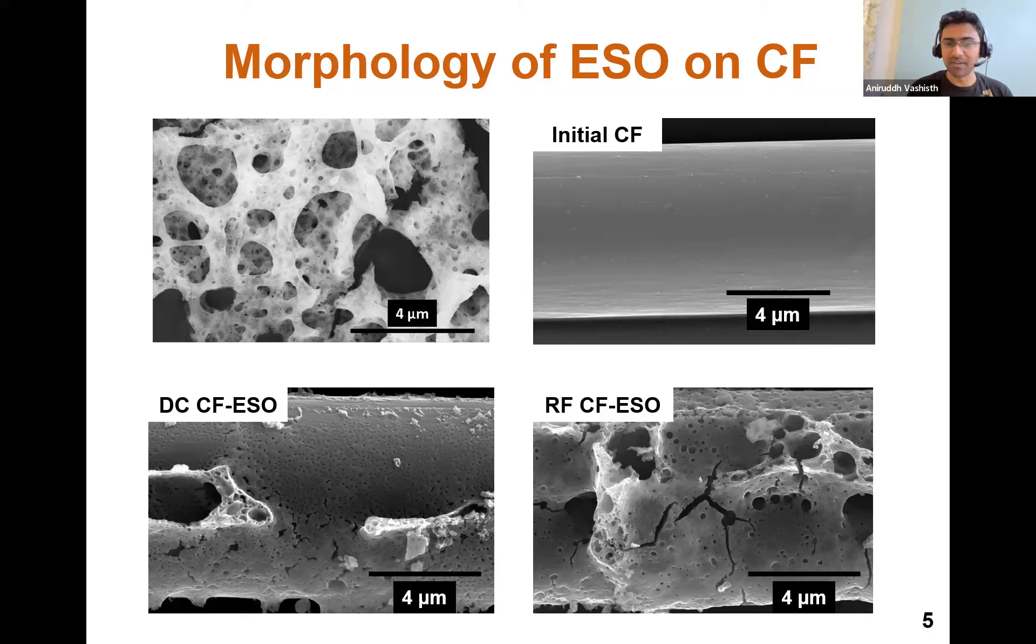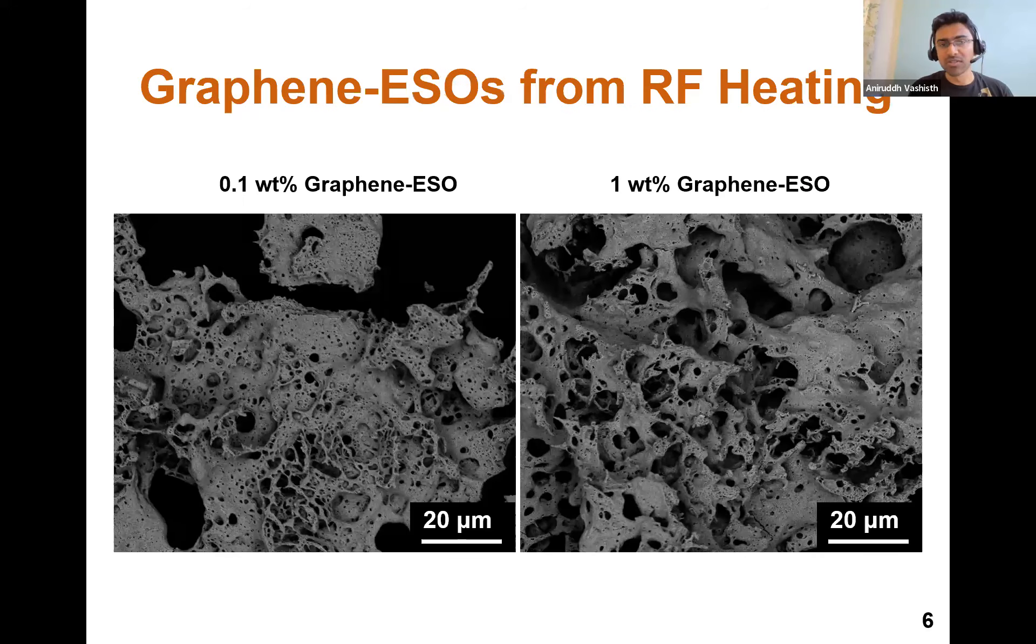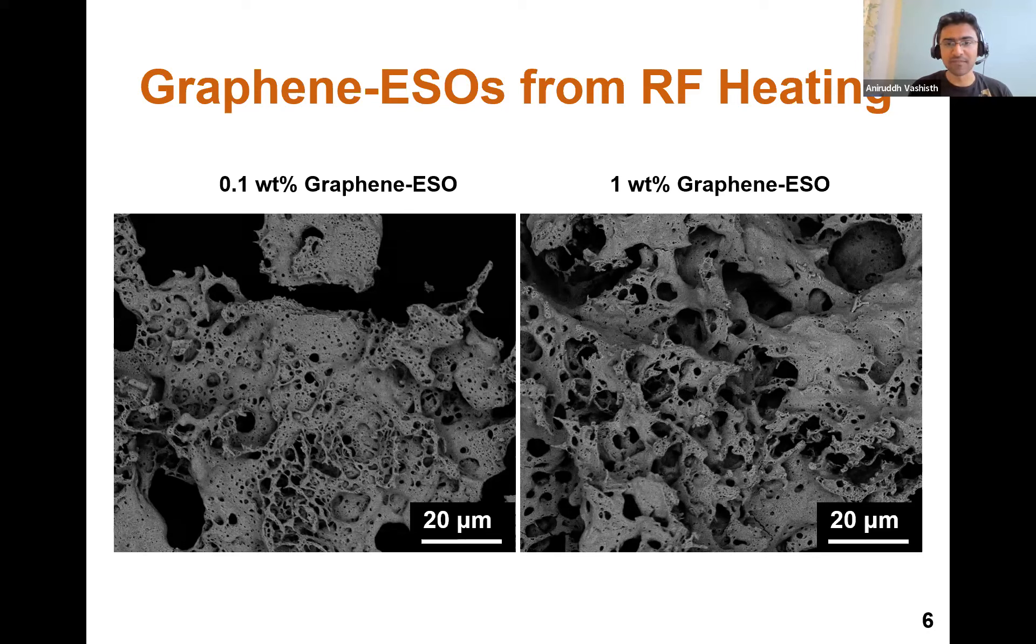But apart from that, we have a really nice layer of ESOs on top of these carbon fibers. So it provides this multifunctional modality to these materials where the ESO carbon fibers can be used for structural applications, as well as energy storage applications. We also synthesized some graphene ESO material that can be used for battery materials. And we saw that the morphology looks very interesting and promising, with micro and nano pores in it.